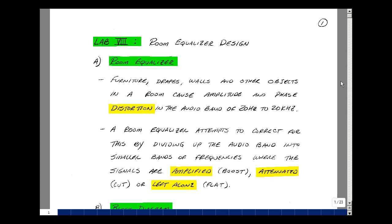This lesson deals with lab number eight, the design of a room equalizer. If you're listening to music in a confined space, the furniture, drapes, walls, and other objects in a room can cause amplitude and phase distortion in the audio band. A room equalizer attempts to correct this by dividing the audio band up into smaller bands of frequencies where the signals can be amplified, attenuated, or just left alone. We refer to this as boosting, cutting, or just flat response.